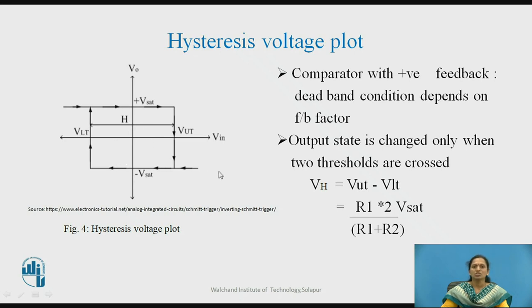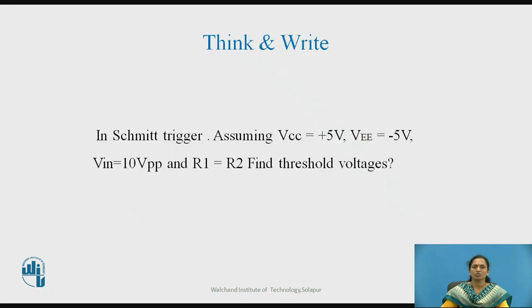The loop goes from negative to positive in one direction and from positive to negative in the other direction. In this way you will get the hysteresis voltage plot.